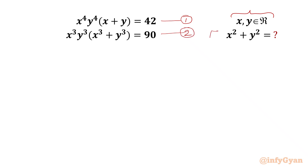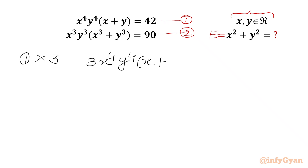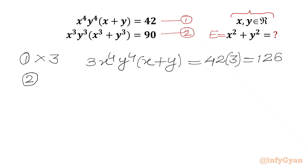The required expression is E. Now I will multiply our first equation by 3. So, equation 1 times 3 gives us 3·x⁴·y⁴·(x+y) = 42×3, which equals 126. Now I will write our equation 2: x³·y³·(x³+y³) = 90.